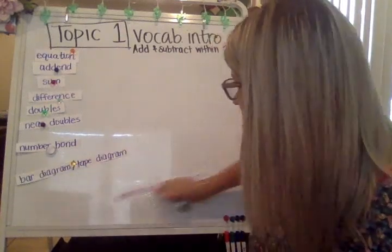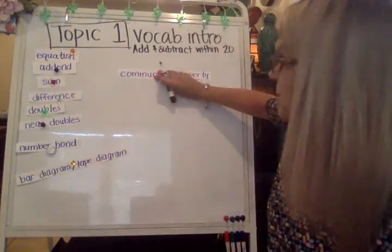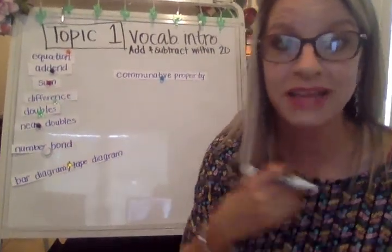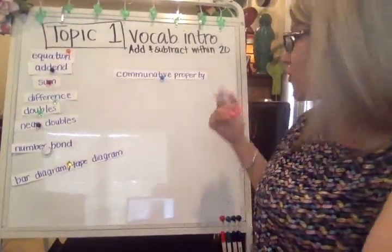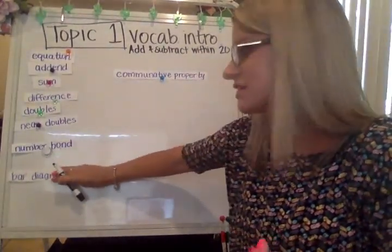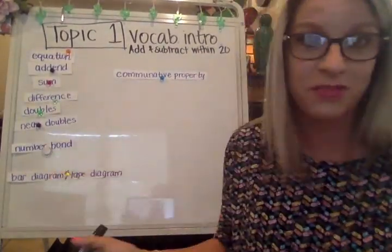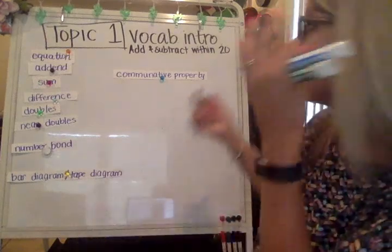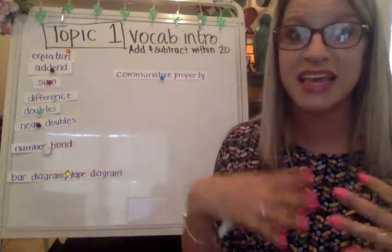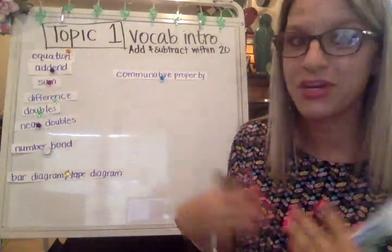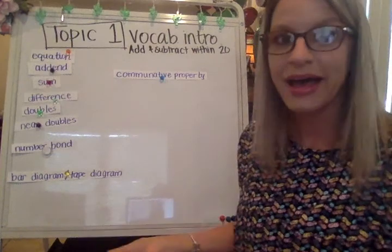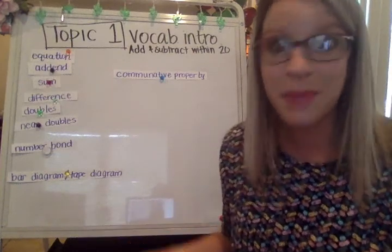The last term I want to talk about is the commutative property. The commutative property of addition just means that you can put the numbers in any order when you're adding and it's going to equal the same amount.